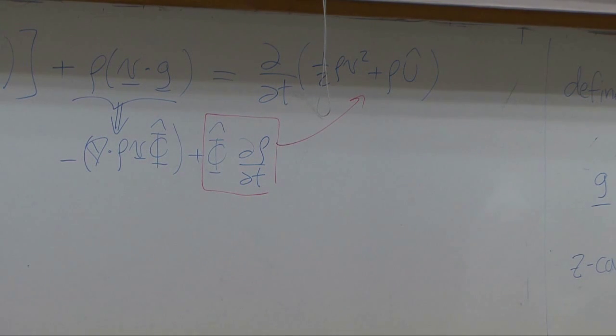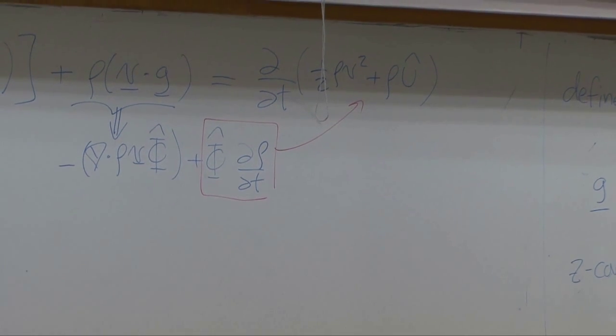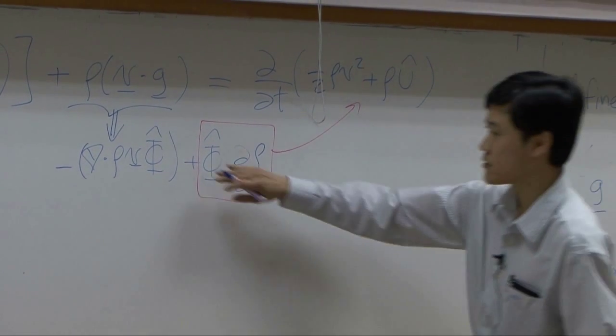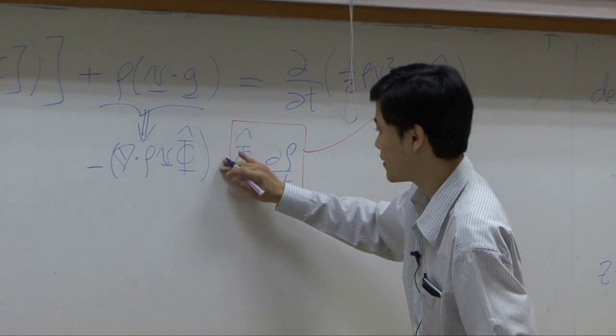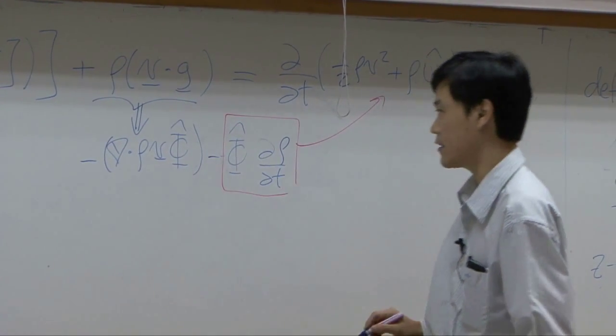Correction: this one is plus, this one is negative, and this one is supposed to be negative.